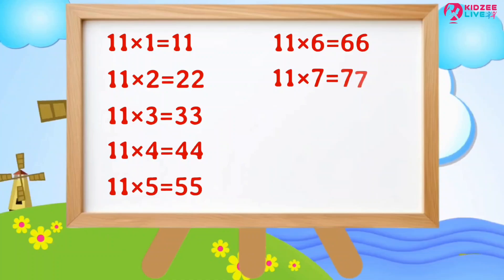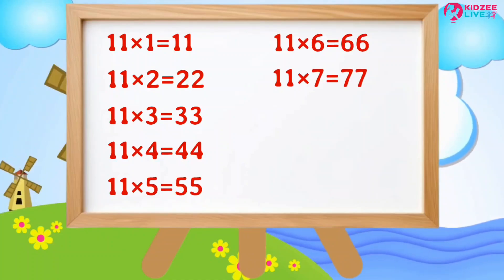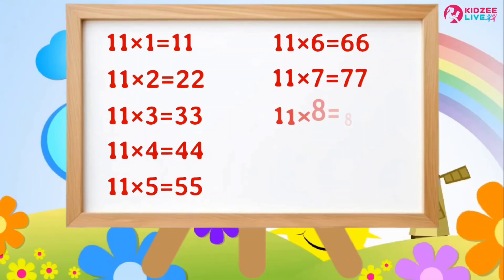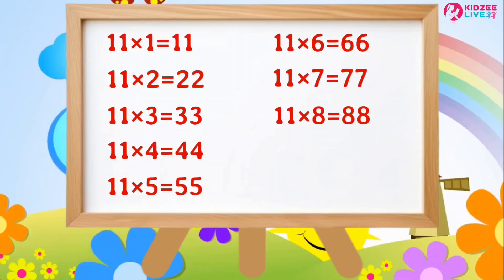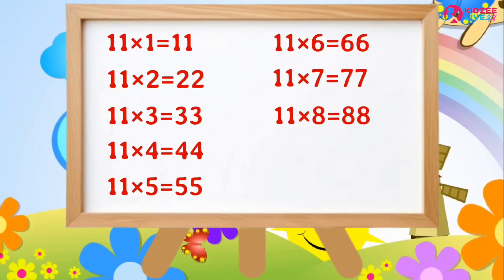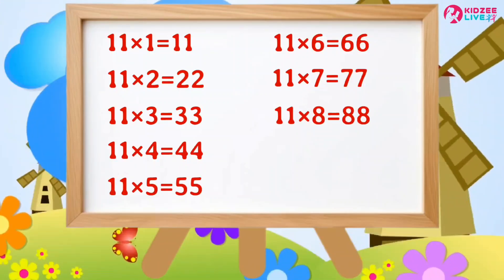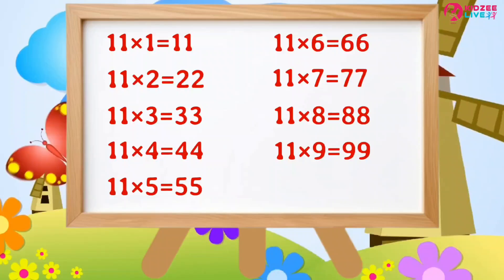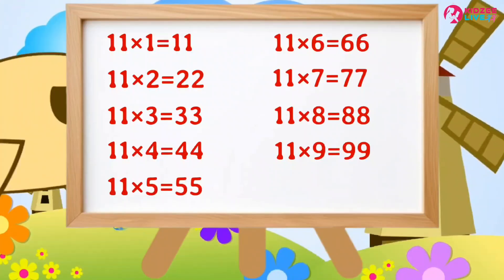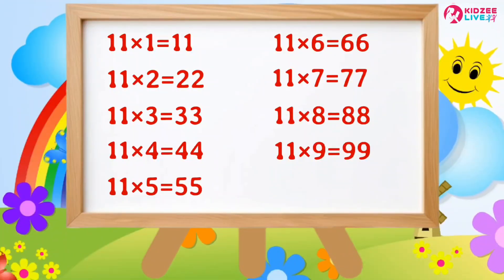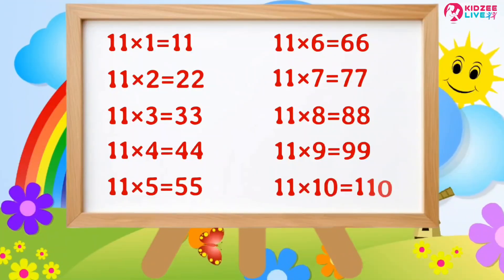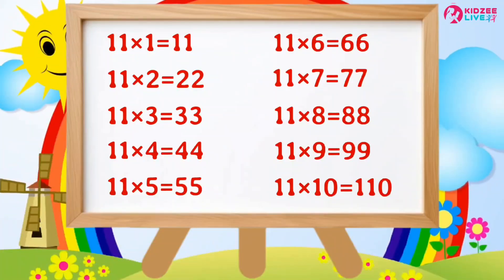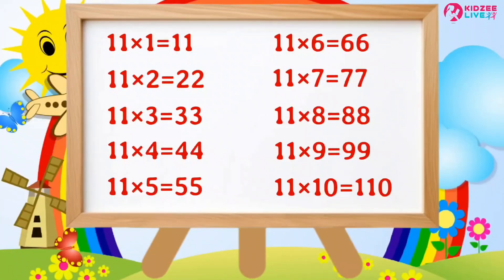Eleven sevens are seventy-seven. Eleven eights are eighty-eight. Eleven nines are ninety-nine. Eleven tens are one hundred and ten.